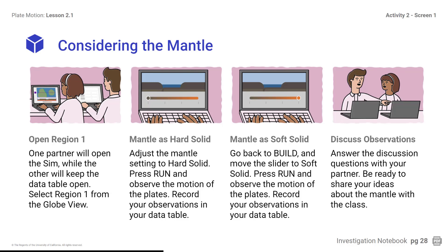These are the steps to examine the mantle in the sim. Open Region 1: one partner will open the sim while the other keeps the data table open. Select Region 1 from the globe view. Mantle as hard solid: adjust the mantle setting to hard solid, press Run, and observe the plate motion. Record your observations in the data table. Mantle as soft solid: go back to Build and move the slider to soft solid, press Run, and observe the motion of the plates. Record your observations. Then answer the discussion questions with your partner and be ready to share your ideas about the mantle with the class.